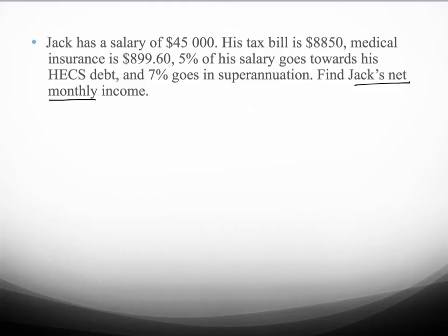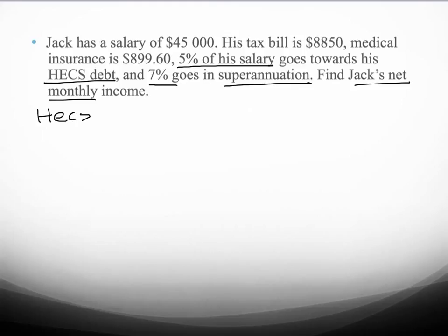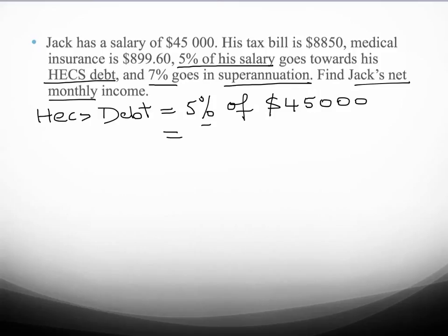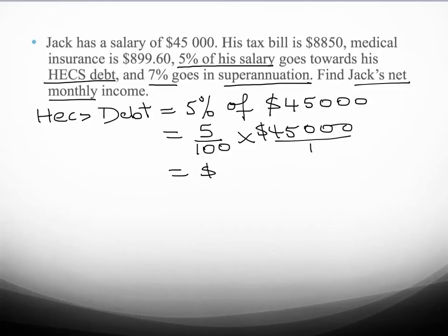When we look at this question, we see that there are a couple of calculations which need to be done. We have to find 5% of his salary which goes towards his HECS debt, and 7% which goes into superannuation, so we're going to do those calculations first. HECS debt equals 5% of $45,000, that's 5 divided by 100 times $45,000, which gives us $2,250.